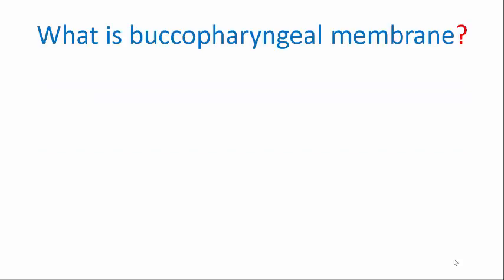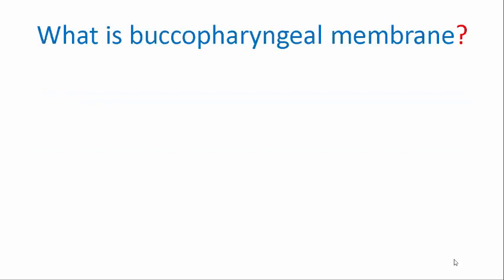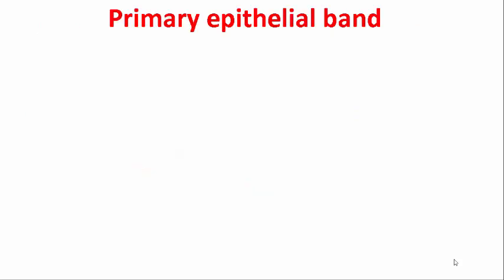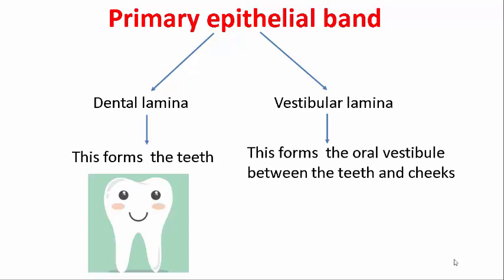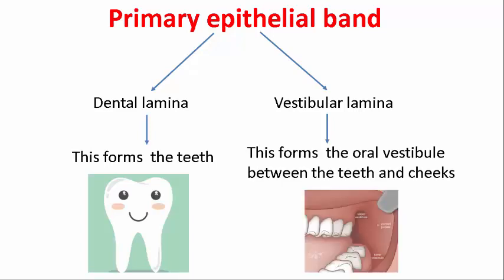The oroectoderm contacts the endoderm of the foregut to form the buccopharyngeal membrane. At about the 6th week, this membrane ruptures and the primary epithelial band starts to form. The primary epithelial band forms the dental lamina and the vestibular lamina. The dental lamina forms the teeth, and the vestibular lamina forms the oral vestibule between the teeth and the cheek.